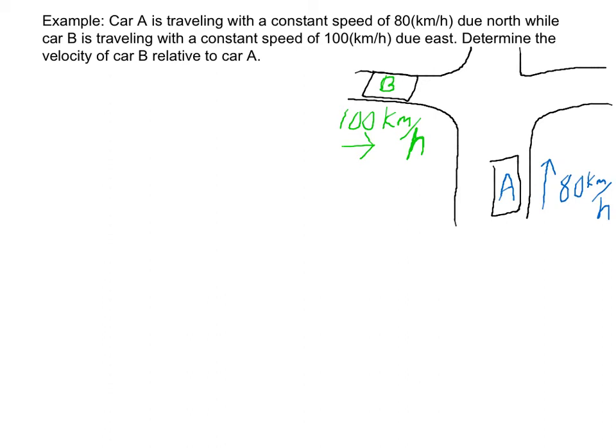So let's draw a graph. We'll have our origin, and so we'll have our A, which is 80 kilometers per hour. And we'll have our car B, which is 100. And then the velocity of B with respect to A is right there.